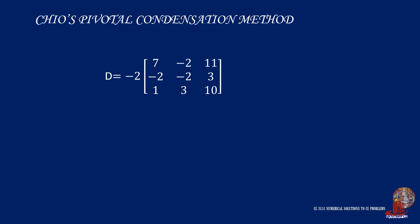The reduced matrix has order 3, where we can find the determinant through shortcut methods. Do not forget that there is a negative 2 scalar. Using SARS rule, we again mirror the first two columns and then compute for the products of the elements in diagonals. The first has 7 times negative 2 times 10, which gives negative 140. The next has negative 2 times 3 times 1, giving negative 6. The last diagonal has 11 times negative 2 times 3, resulting in negative 66.